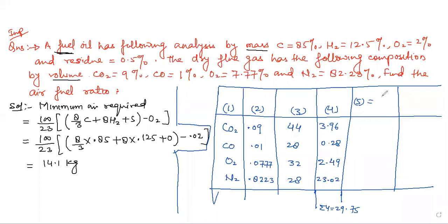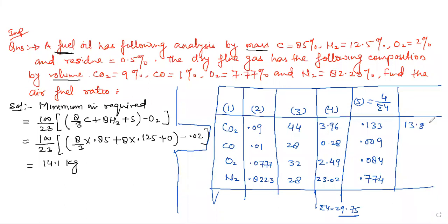Dividing each proportional mass by the summation (29.75), we get the mass fractions: CO2 is 0.133, CO is 0.009, O2 is 0.084, and N2 is 0.774. Multiplying by 100, the percentage mass composition is: CO2 = 13.3%, CO = 0.9%, O2 = 8.4%, and N2 = 77.4%. This completes the conversion from volumetric to mass composition.